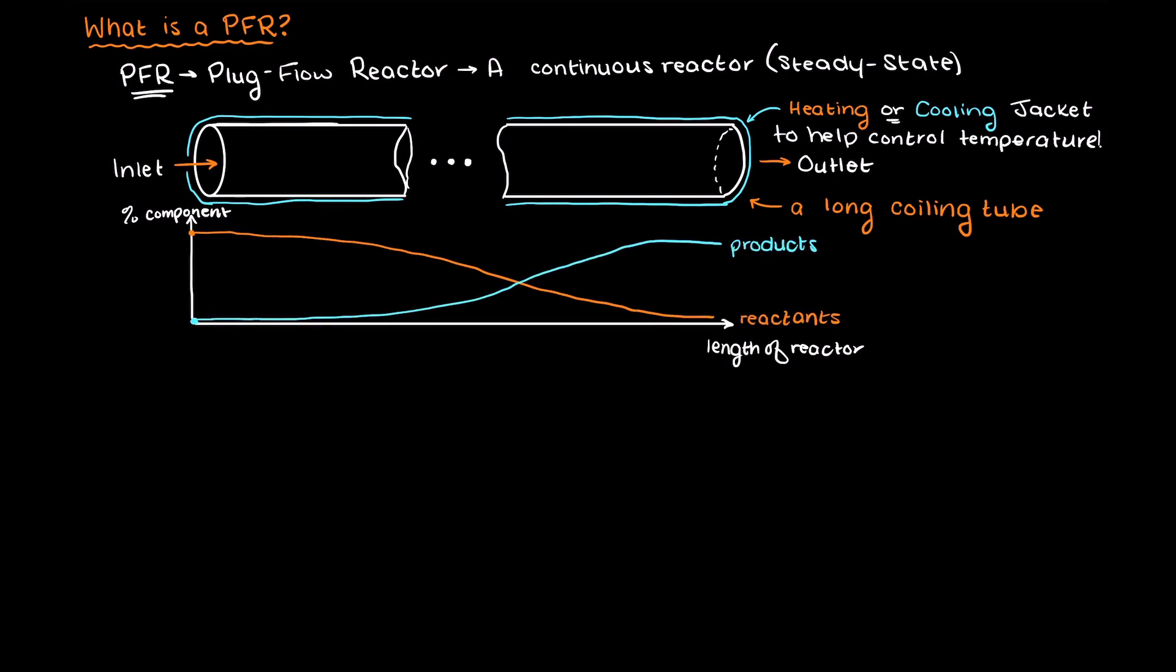There are many ideal assumptions with the plug flow reactors, so let's go through these now. Firstly, we assume that there is no axial mixing in the reactor. This means that we are assuming that point B here has no interaction with points A and C.